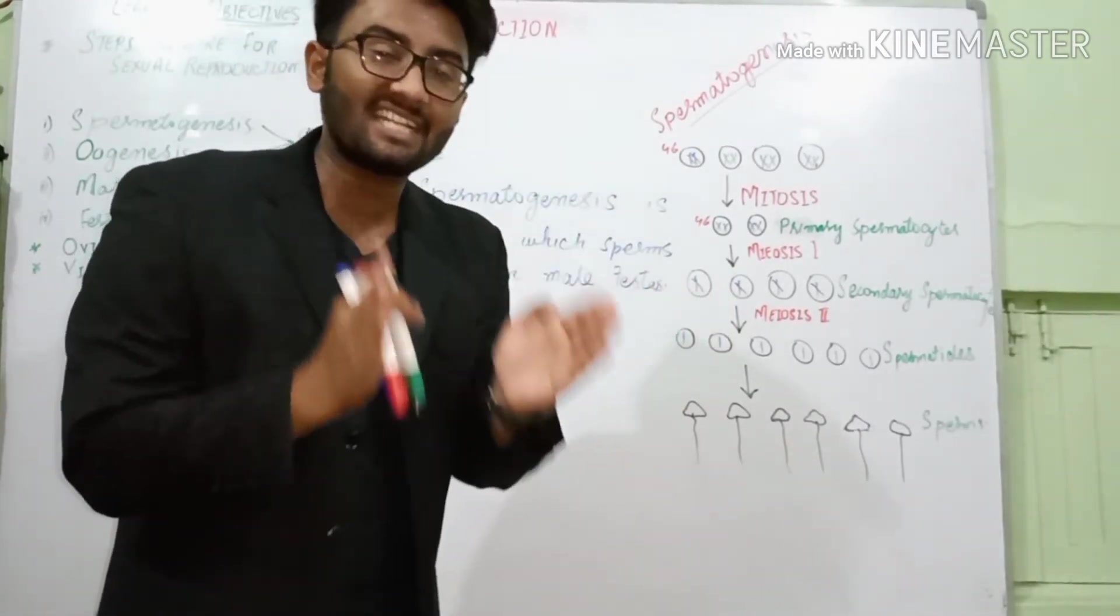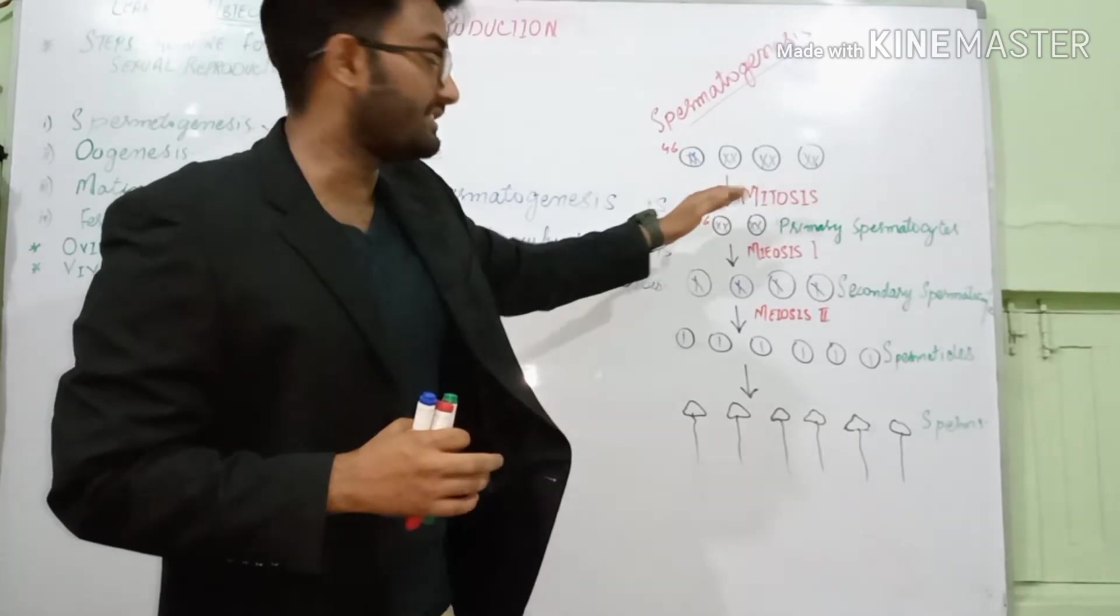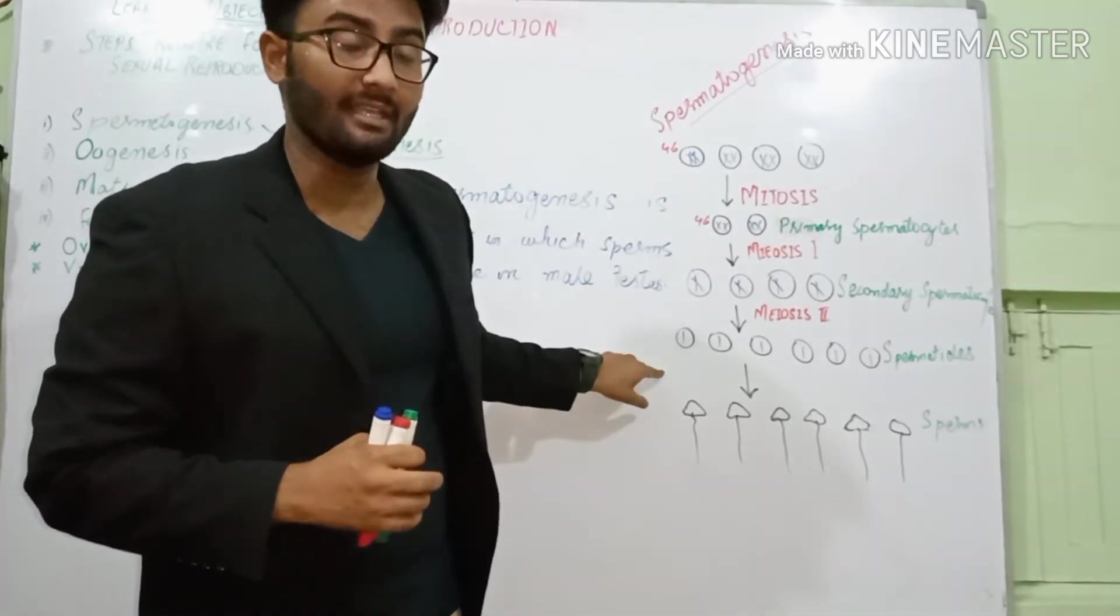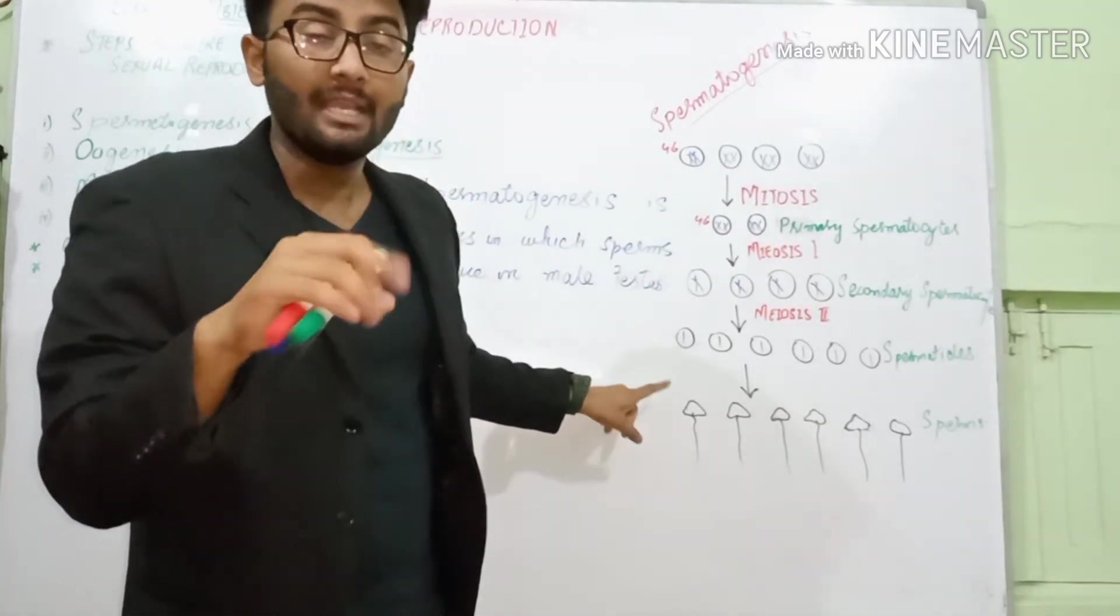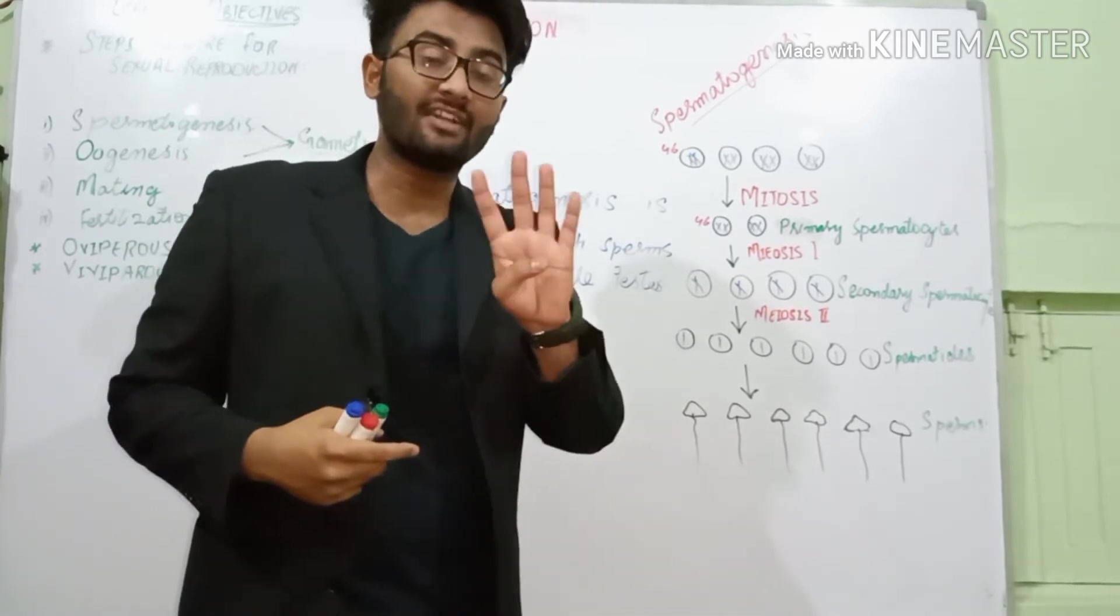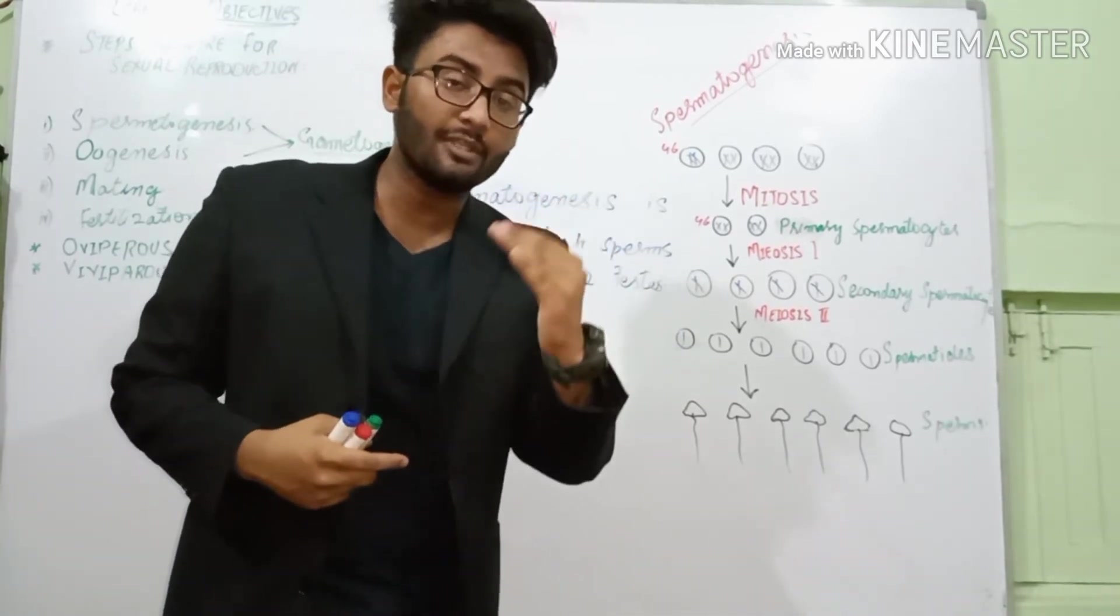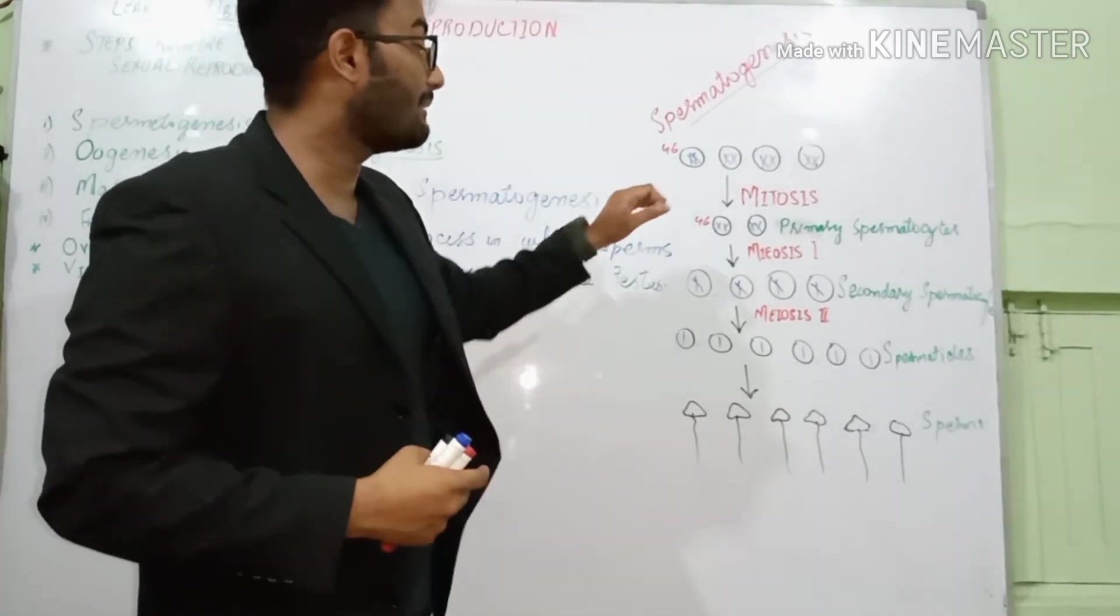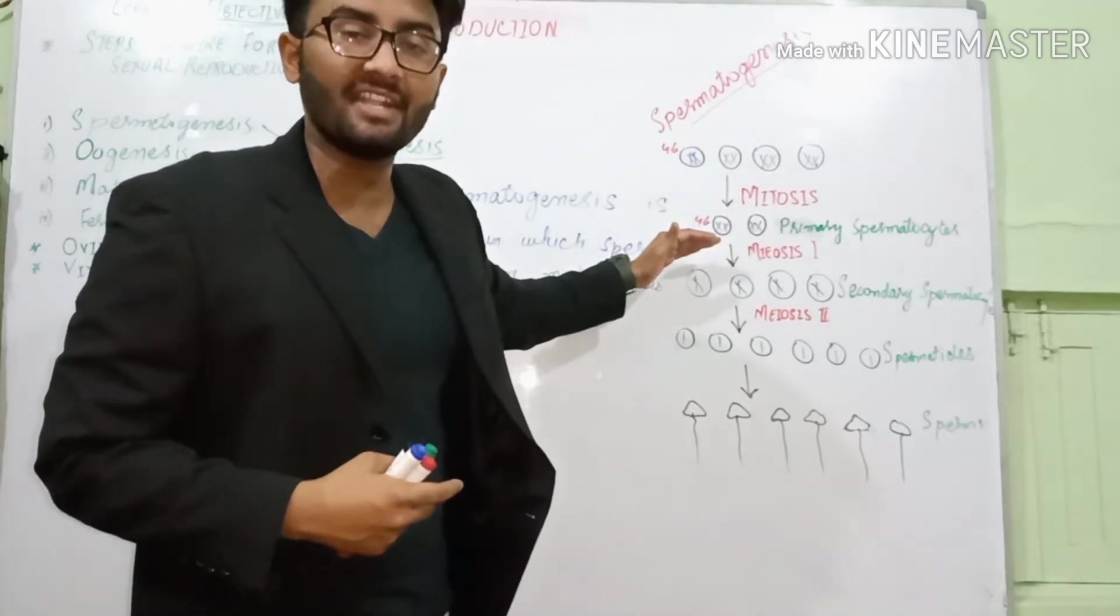But in meiosis, it's exactly similar to that of mitosis. The number of chromosomes is the same. But the number of chromosomes becomes half. The outcome of meiosis gives rise to the four cells. The number of chromosomes reduced to half, while in mitosis the number of chromosomes remains once after division.